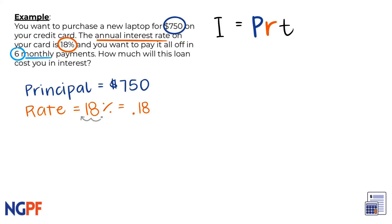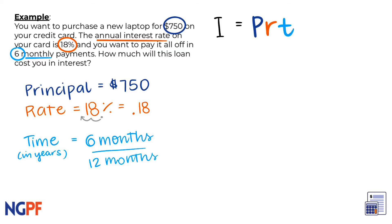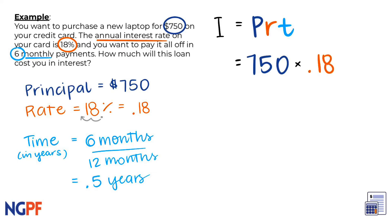Lastly, we need time in years, which is six months. When divided by 12 months, that is half a year. Next, we can substitute our values into the formula. To find the interest amount, we can multiply all three of our values, so we will get 750 times 0.18 times 0.5.